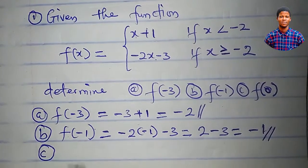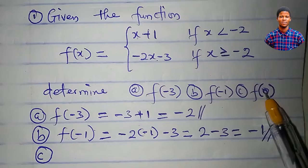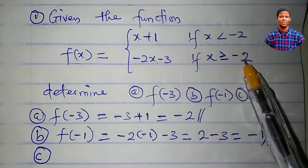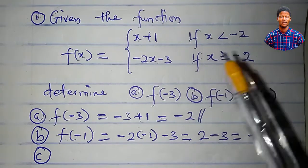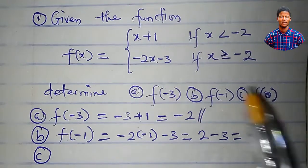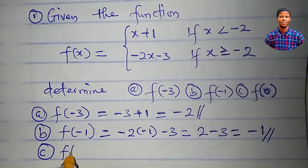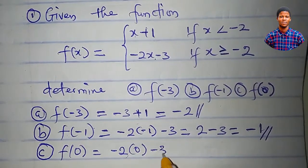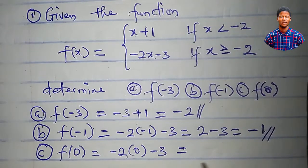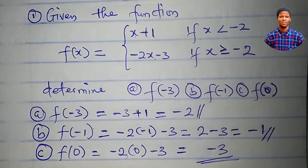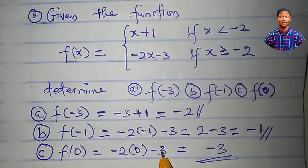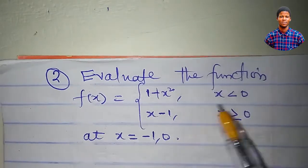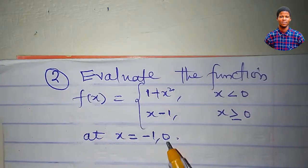For the last one, f(0): just like we said earlier, 0 is greater than minus 2, so I will still use the sub-function minus 2x minus 3 to evaluate f(0). So f(0) equals minus 2 times 0 minus 3. Minus 2 times 0 is 0, so I have just minus 3. Therefore f(0) equals minus 3.